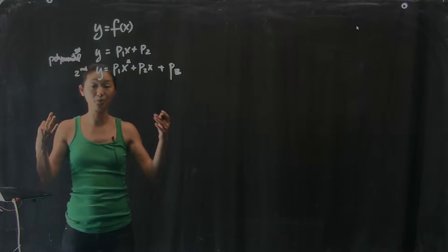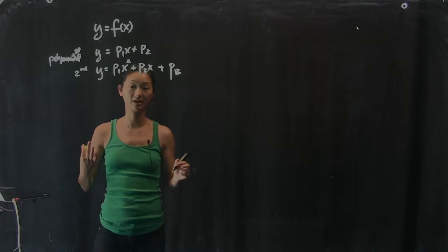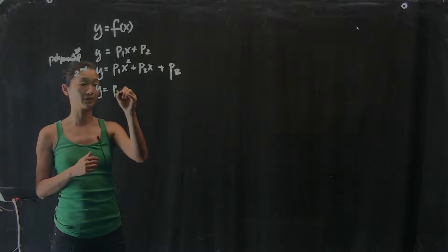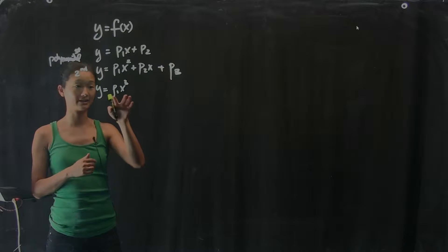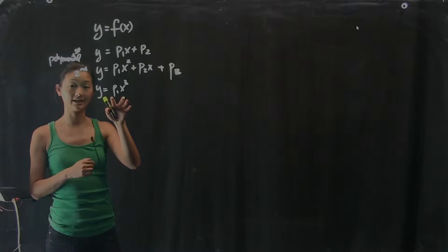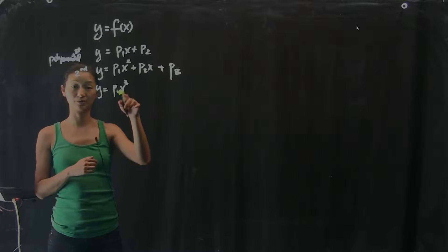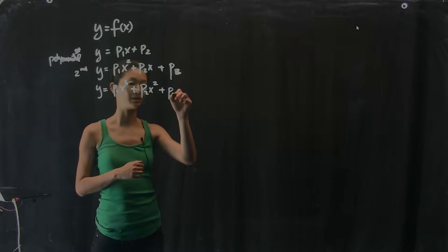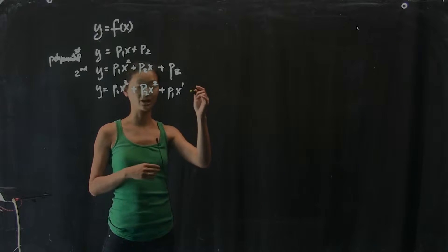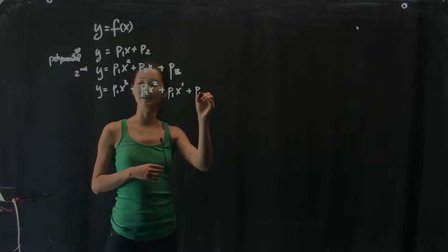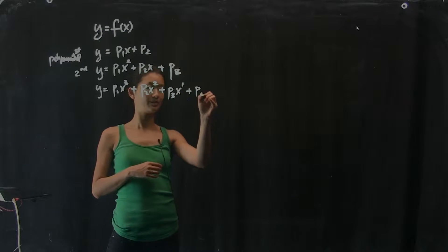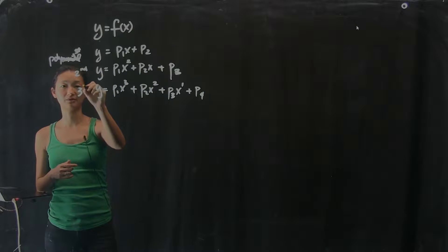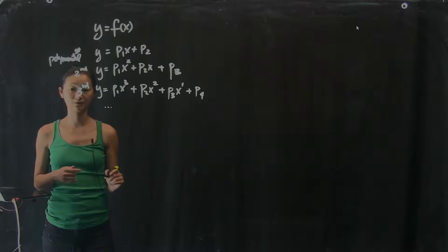We can write more complex forms for polynomials. For example, a third-order polynomial simply adds another term in front — a number times x cubed — and then inherits all the other terms: a number times x squared, a number times x to the first power, plus a constant p4. So we have first-order, second-order, third-order polynomials, and so on.